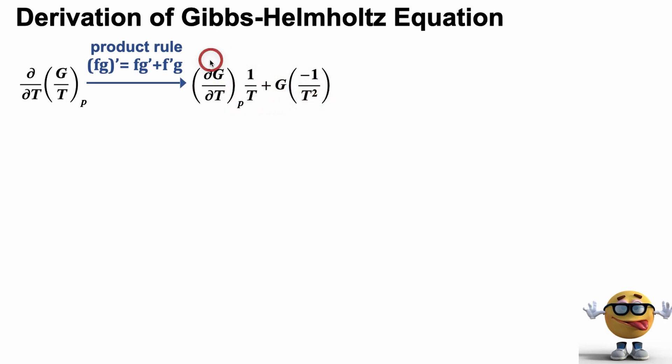And now we're going to simplify this. And to do that, we need to figure out what this derivative is. And to do that, we use a fundamental equation, dG equals VdP minus SdT. I've derived this in previous videos as well.